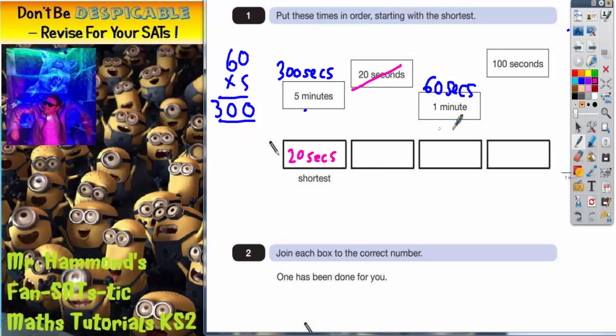Instead of writing 60 seconds, I need to write what the original thing was, which is one minute. So we're going to write one minute next. Now we've got 300 seconds and 100 seconds, so 100 seconds is next shortest. If that one's done, there's only one left - 300 seconds. Remember the original one, so we're going to write five minutes. That's question one done, but the advice there really was just to turn them all into seconds to make it easier to compare.